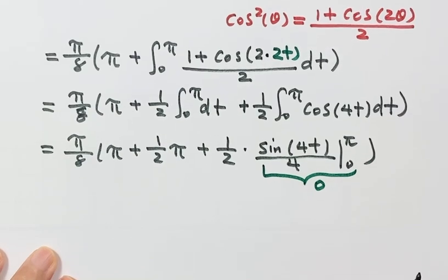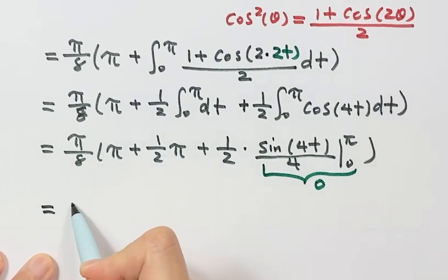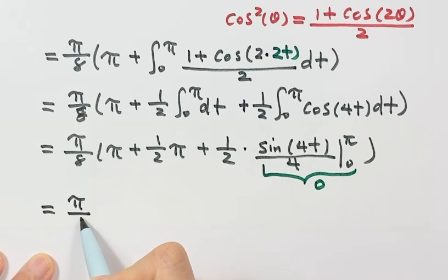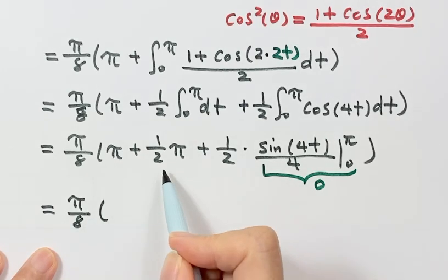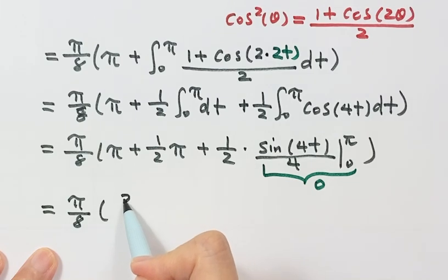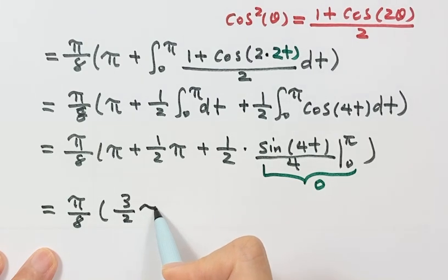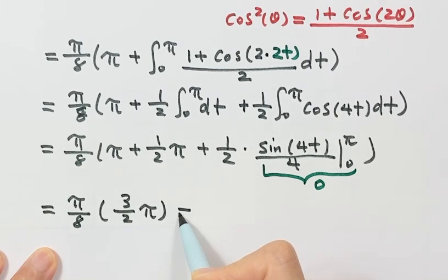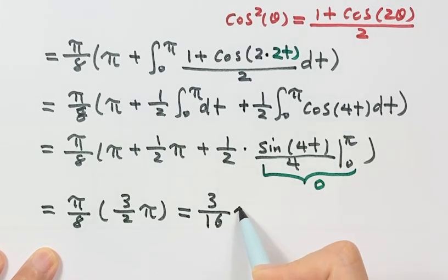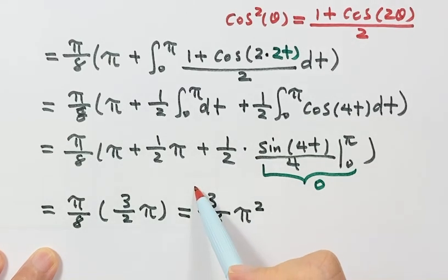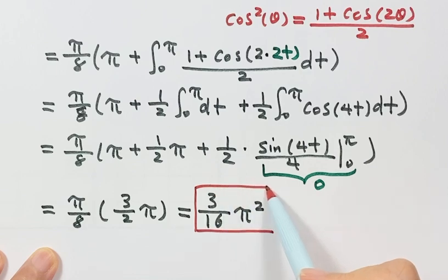So here we have π over 8. Combining the inside parts, that's 3 over 2 times π. Putting them together gives 3 on top and 16 on the bottom, times π squared. So the final answer for this integral is 3π² over 16.